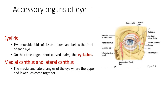Now look at the two movable folds of tissue called the eyelids. There is one above the front of the eye and one below — the upper eyelid and the lower eyelid. This is the medial angle or medial canthus, and the lateral angle or lateral canthus. The free edges of the eyelids contain short curved hairs called eyelashes.